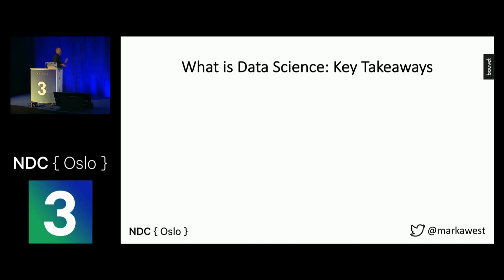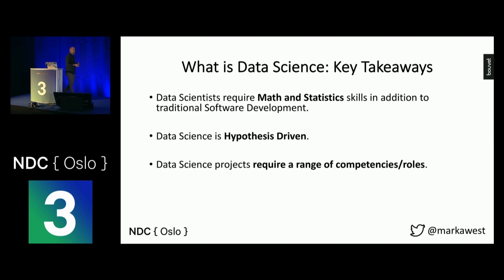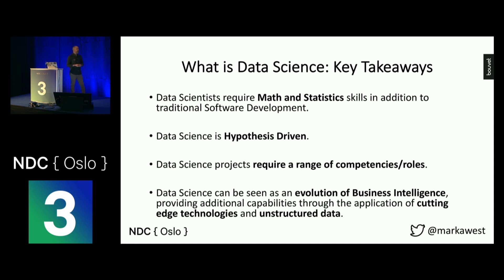So key takeaways from the first part: data scientists require math and statistics skills in addition to what we do every day. Data science is hypothesis-driven. To undertake a data science project, you need a range of competences — you don't necessarily need four different people, but you need to cover those competences in your team. And in my opinion, data science can be seen as an evolution of business intelligence — it brings more functionality and technology to the table.